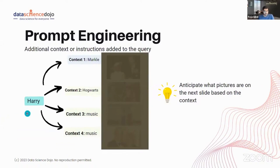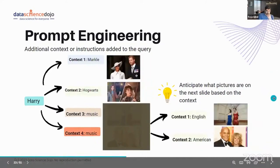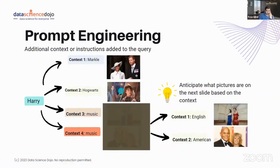Let's take this example. I start with the word 'Harry.' The first context is Markle, the second is Hogwarts, the third is music, and the fourth is also music. In the first two cases it is obvious — this is Prince Harry and this is Harry Potter. But in the second two cases, both have a music context.